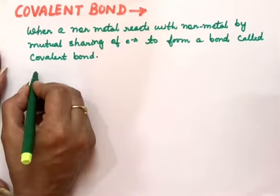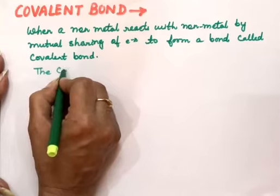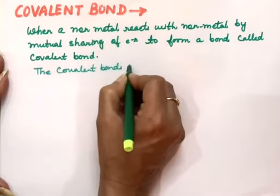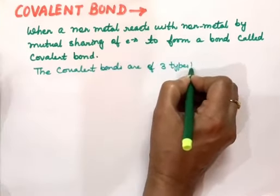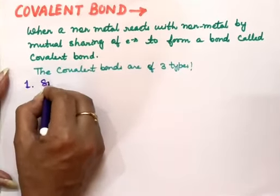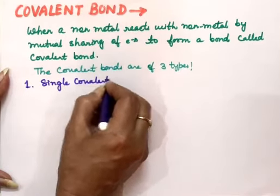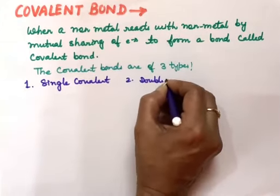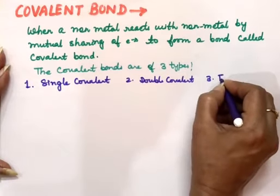Covalent bonds are of three types: single covalent bond, double covalent bond, and triple covalent bond.